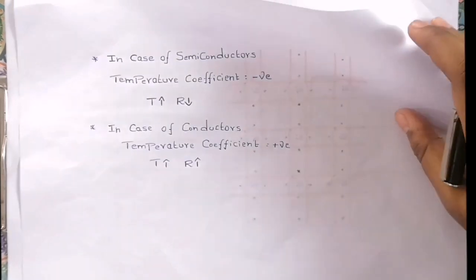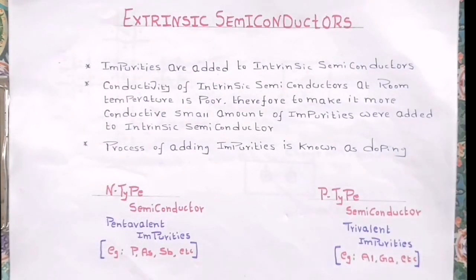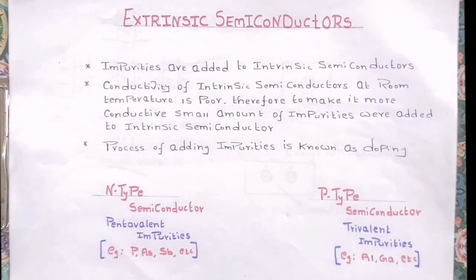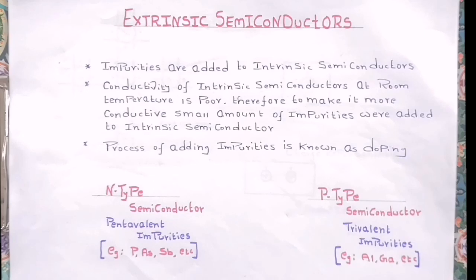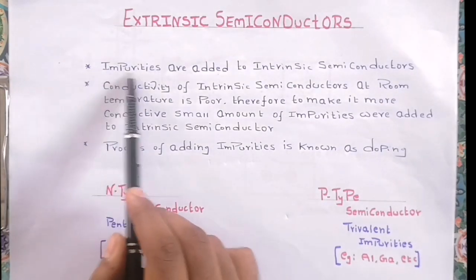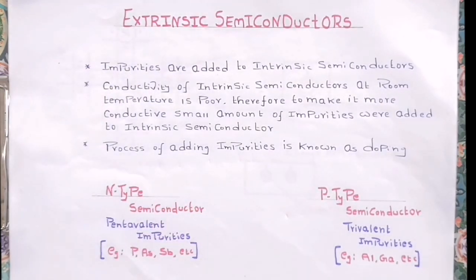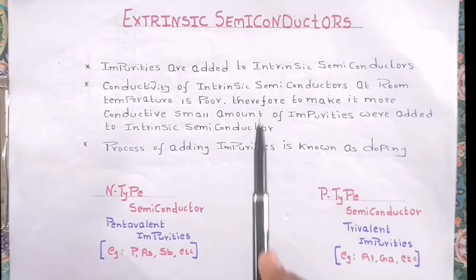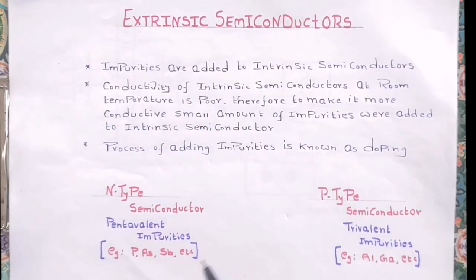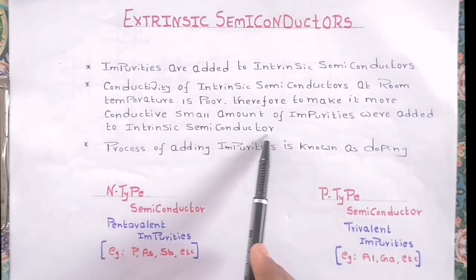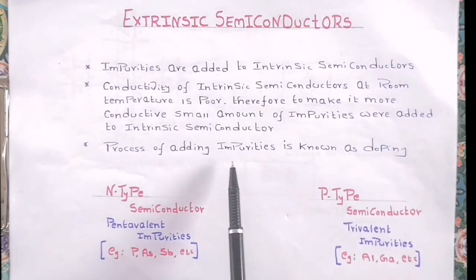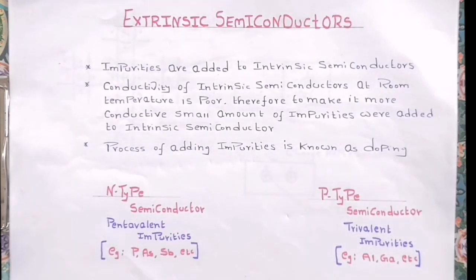Now let's discuss extrinsic semiconductors, which are another form of semiconductors. When we add some impurities to a pure intrinsic semiconducting material, it is converted into an extrinsic semiconductor. The reason we add impurities is that the conductivity of intrinsic semiconductors at room temperature is poor. Therefore, to make it more conductive, a small amount of impurities is added — and this process is known as doping.